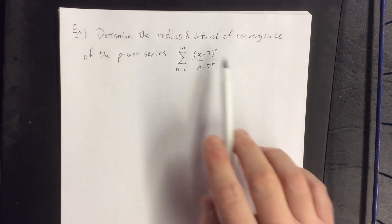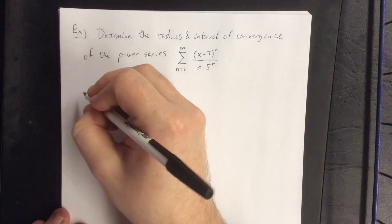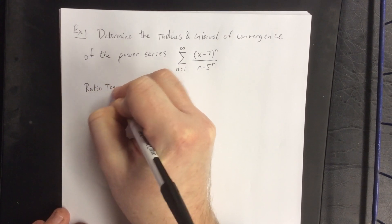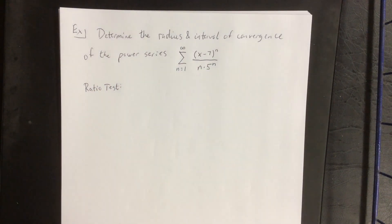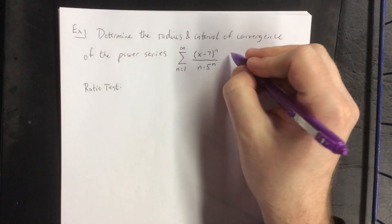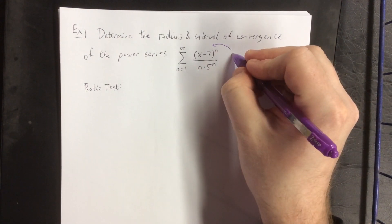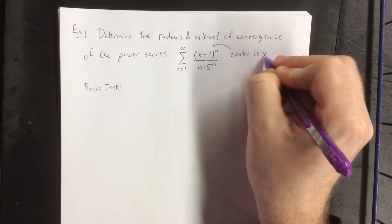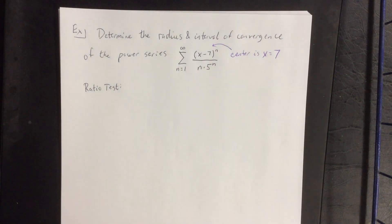Because not everything in here is a power of n, I'm going to apply the ratio test. An observation before I apply the ratio test would be the center of this power series, which we get by setting our x minus 7 equal to 0. Therefore, this power series is going to be centered at x equals 7.